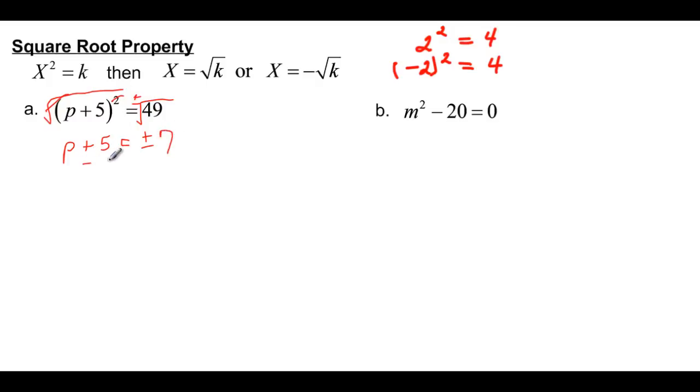And then we just subtract the 5 from both sides, but we're going to have 7 minus 5 and negative 7 minus 5. So p is going to be equal to 7 minus 5 is 2, or p will be negative 7 minus 5, which is negative 12.